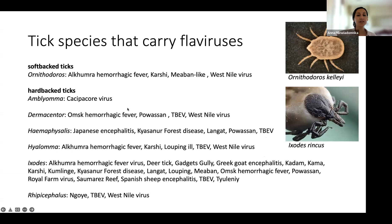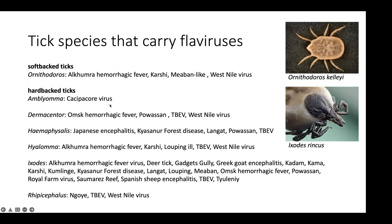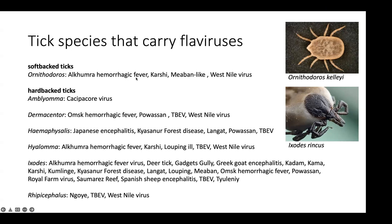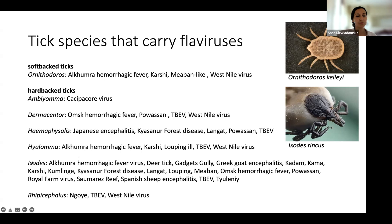The ticks that carry these flaviviruses include more than one specific species. They can be divided into soft-backed ticks in the Ornithodoros species and hard-backed ticks. Multiple types of ticks can transmit the same virus — for example, hemorrhagic fever can be transmitted by both soft and hard-backed ticks. Some of the most studied species are in the Ixodes family. Here is a picture of a sheep tick called Ixodes ricinus, which transmits tick-borne encephalitis virus, my focus today.